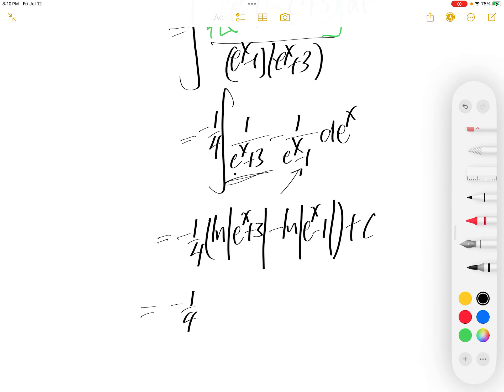Ln of difference is the quotient of the log. It will be e to the power of x plus 3 divided by e to the power of x minus 1 plus c.